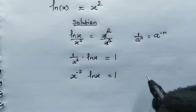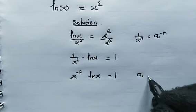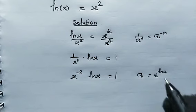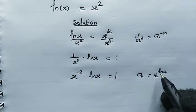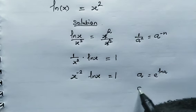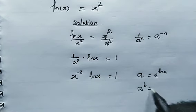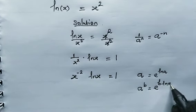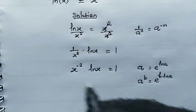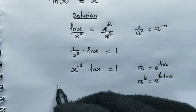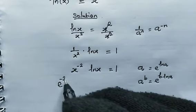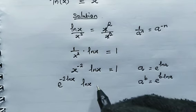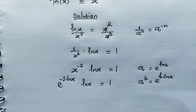Now let's take note of this. A can be written in terms of the natural log with base e as e raised to the power of the natural log of a. When a has the power of b, then we write it as e to the power of b multiplied by the natural log of a. So from the left here, this can be written as e to the power of negative 2 multiplied by the natural log of x, multiplied by the natural log of x. This equals 1.